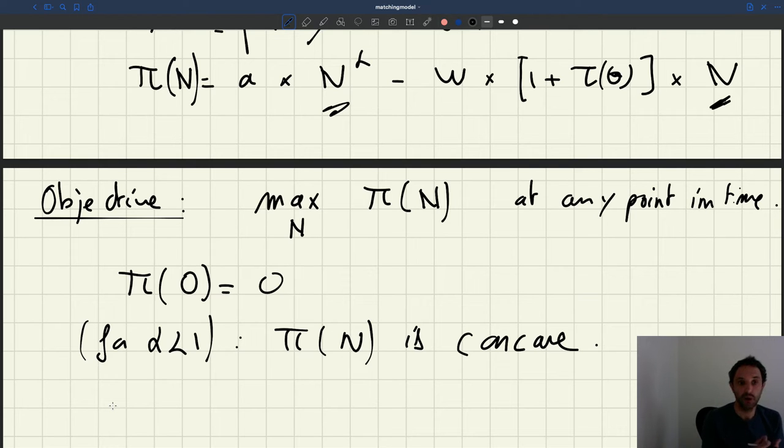That is a solution where the firm hires some workers, otherwise it's not very interesting. So we are trying to find some n positive that maximizes our function and we've seen the function is concave.